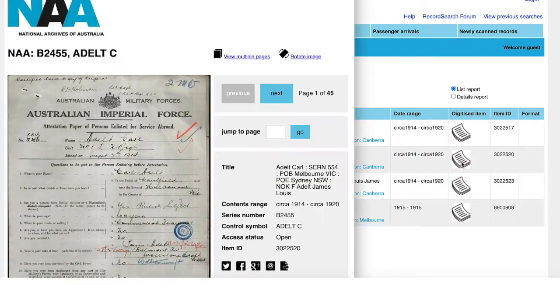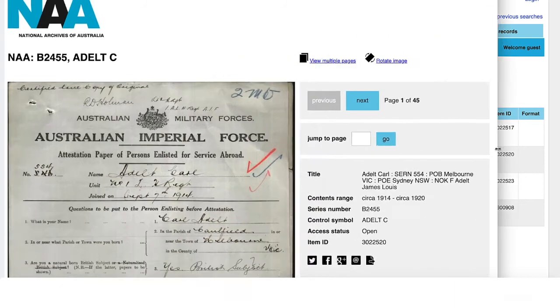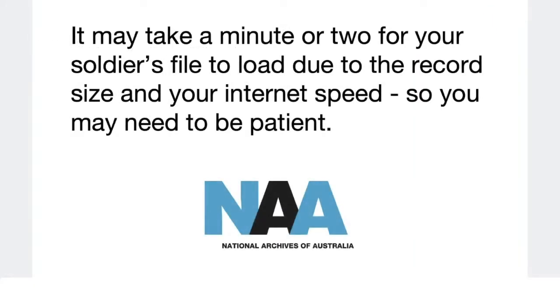We'll open up Carl's record by clicking on the icon. His record is actually 45 pages long and includes a lot of information — not just his enlistment form, which is the first image you see, but in Carl's case also certificates of death, correspondence with next of kin about personal items being returned to them, and some other information.